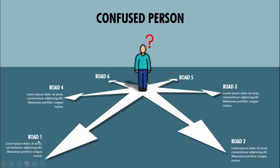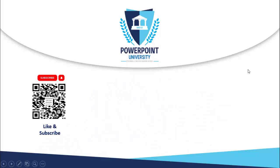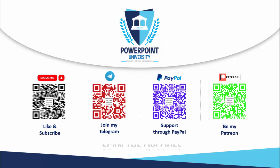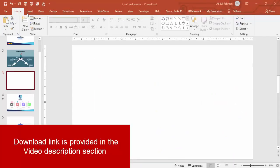I've added the different text — you can see the road numbers one through six with some detail text, and I've put a question mark here to show he is confused. If you have not subscribed to my channel PowerPoint University, please subscribe and enable the bell notification. You can join my Telegram group via the QR code and support my channel through PayPal or Patreon. Now let's start the tutorial.